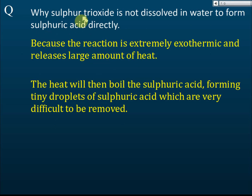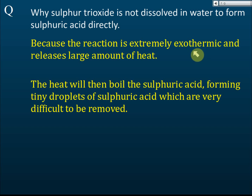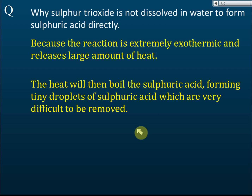Here is a common exam question: why is sulfur trioxide not dissolved in water to form sulfuric acid directly? In stage three, why don't we just dissolve sulfur trioxide directly in water? The reason is because the reaction is extremely exothermic — it releases a large amount of heat. That heat will boil the sulfuric acid, forming tiny droplets of sulfuric acid mist which are very difficult to remove.